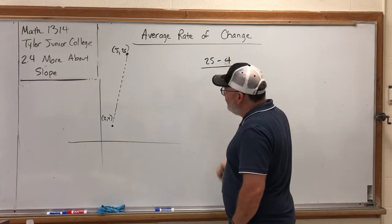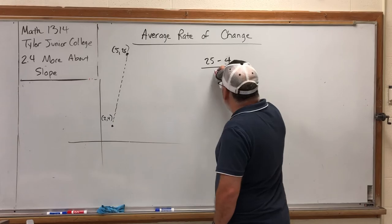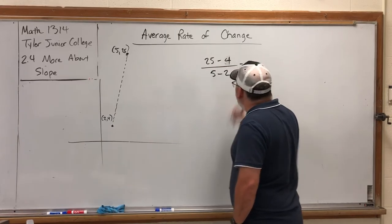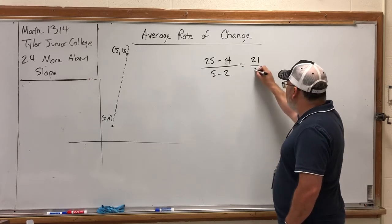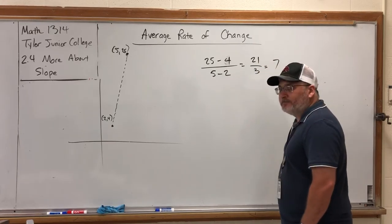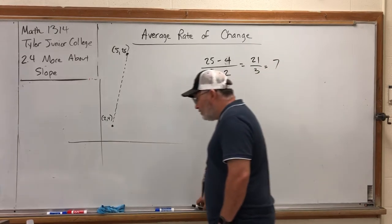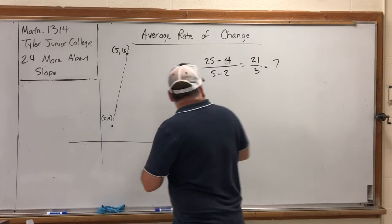If I figured out the slope, it would be 25 minus 4, second y minus first y, over 5 minus 2. Well, 25 minus 4 is 21, 5 minus 2 is 3, so the slope is 7.